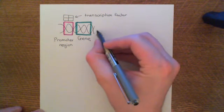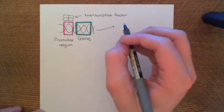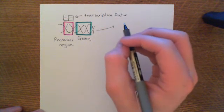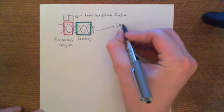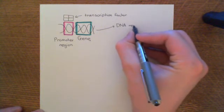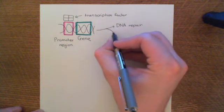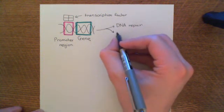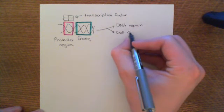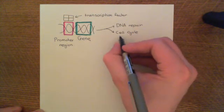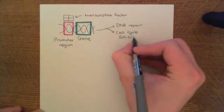So what genes does P53 increase the expression of? Well, what was the whole point of this pathway? We had found DNA damage. We had found this chemical modification to DNA. So we want to activate the machinery involved in DNA repair. So basically, you are going to upregulate the proteins involved in DNA repair for a start. In addition, you're going to upregulate the genes involved in stopping the cell cycle. So cell cycle inhibitors are going to have their expression increased. So these are proteins which stop the cell from dividing into two.